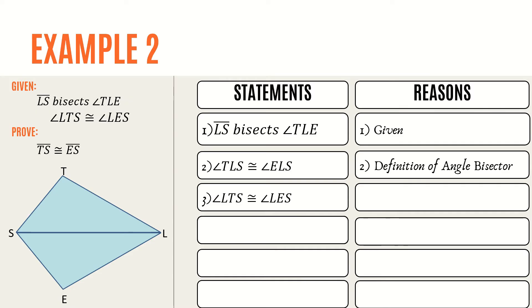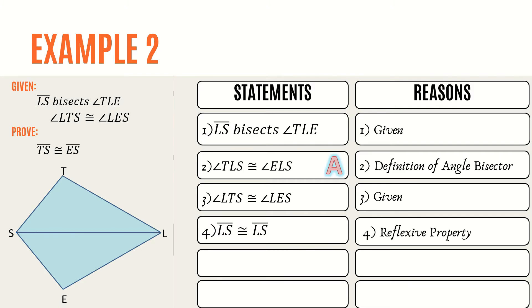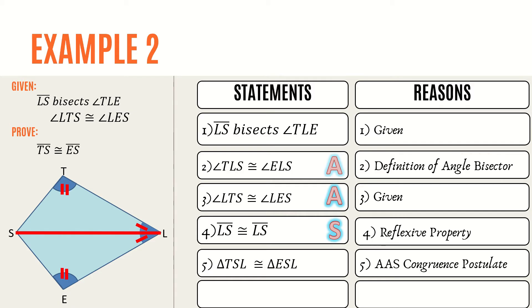The two angles have the same measure since they are the result of side SL bisecting angle TLE. For our third statement, angle LTS is congruent to angle LES — it is the second given, so the reason is given. The two triangles STL and SEL share a common side SL. Therefore, side LS is congruent to side LS by the reflexive property. For our fifth statement, since angle TLS ≅ angle ELS, angle LTS ≅ angle LES, and side LS ≅ side LS, we can say that triangle TSL is congruent to triangle ESL by the AAS congruence postulate.